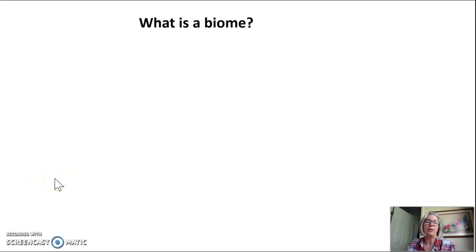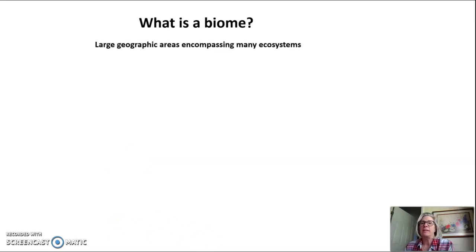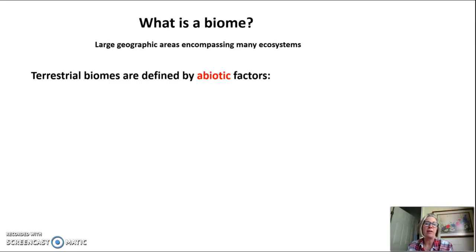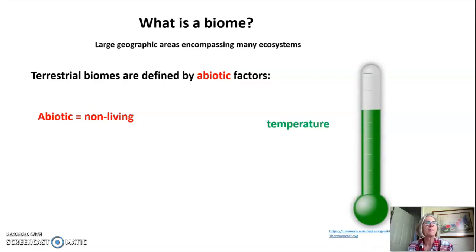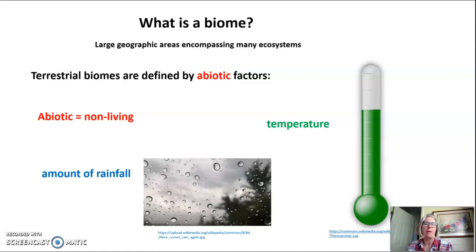Hi everyone. Tonight's video is on terrestrial biomes. So what is a biome? A biome is a large geographic area encompassing many ecosystems. Terrestrial biomes are defined by abiotic factors — abiotic means non-living. There are two abiotic factors that determine terrestrial biomes: temperature and the amount of rainfall.